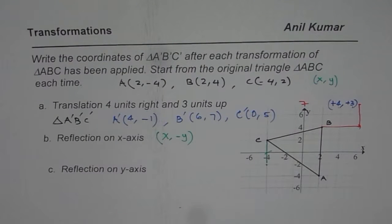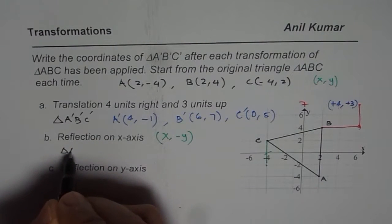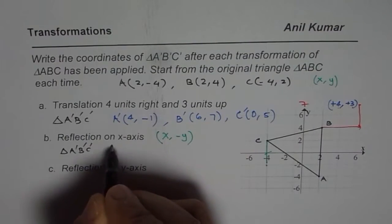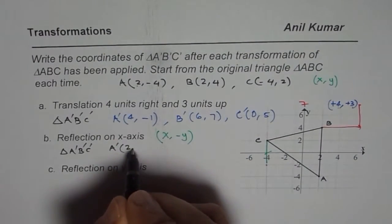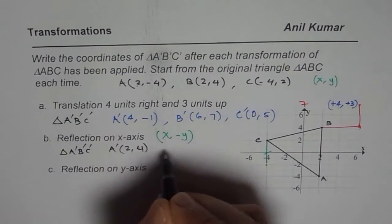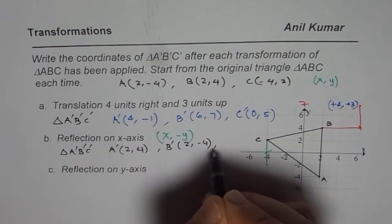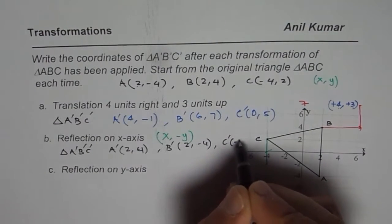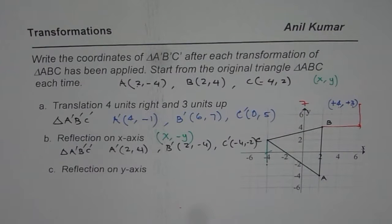For the second transformation which is triangle A'B'C' again, x values remain same but the y values will become negative of existing value. So A' will be (2, 4), B' will be (2, -4), and C' will be (-4, -2).